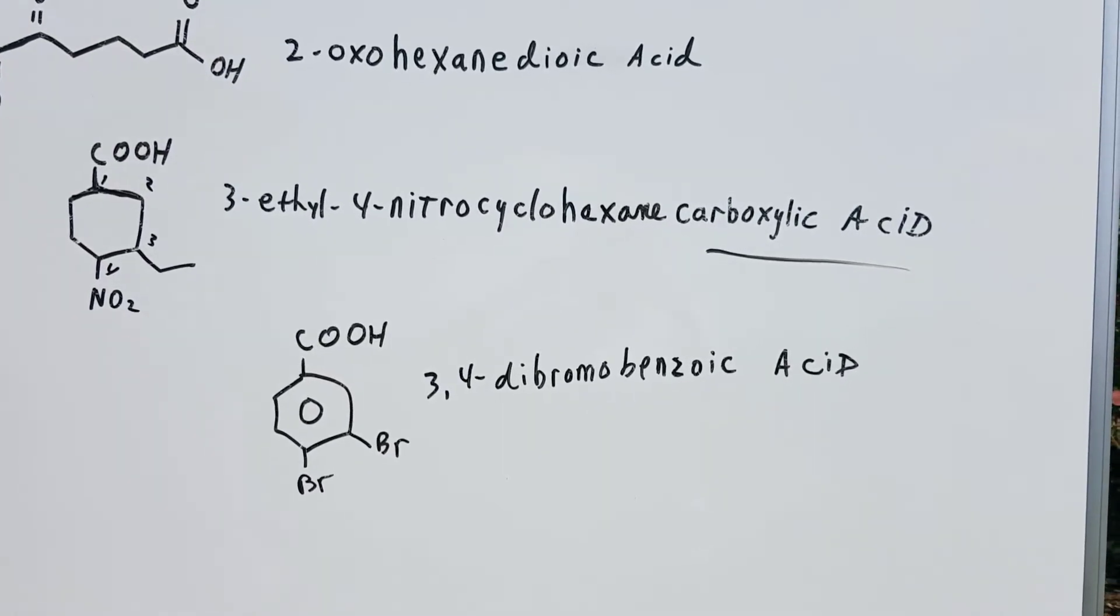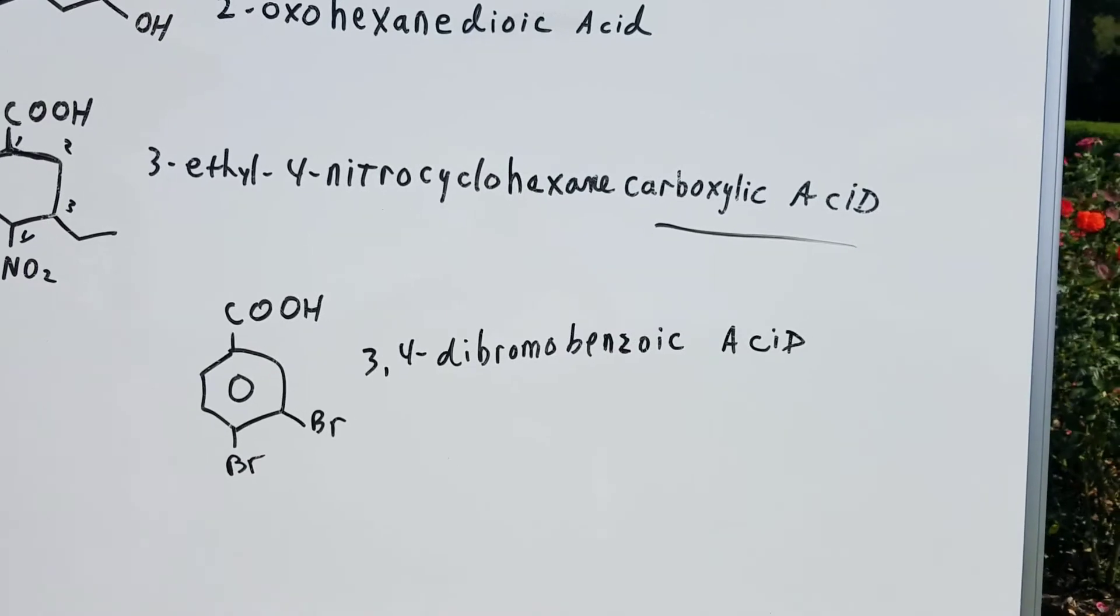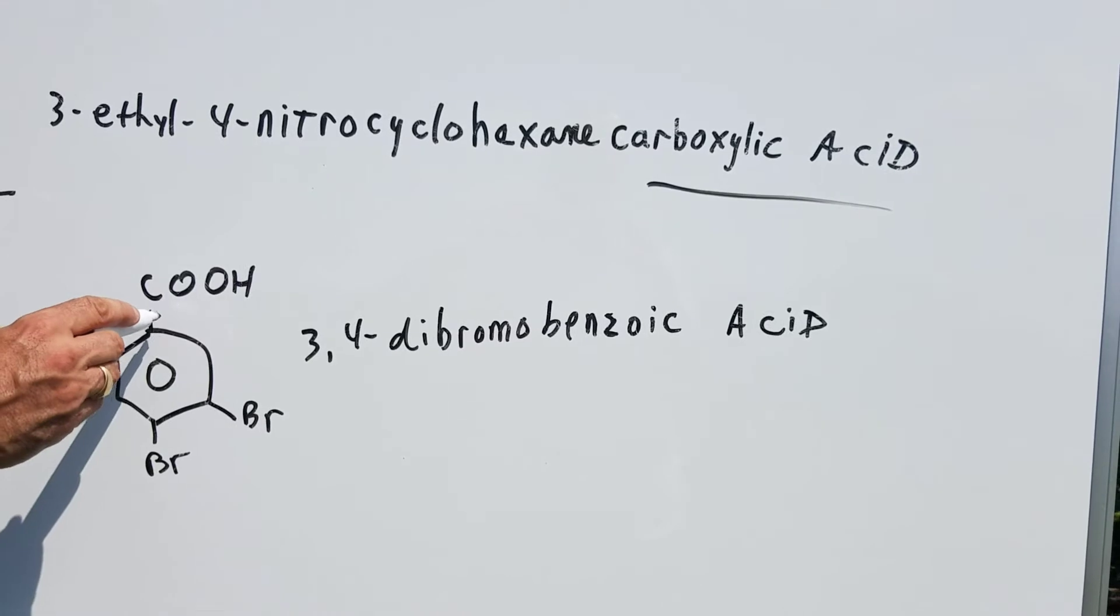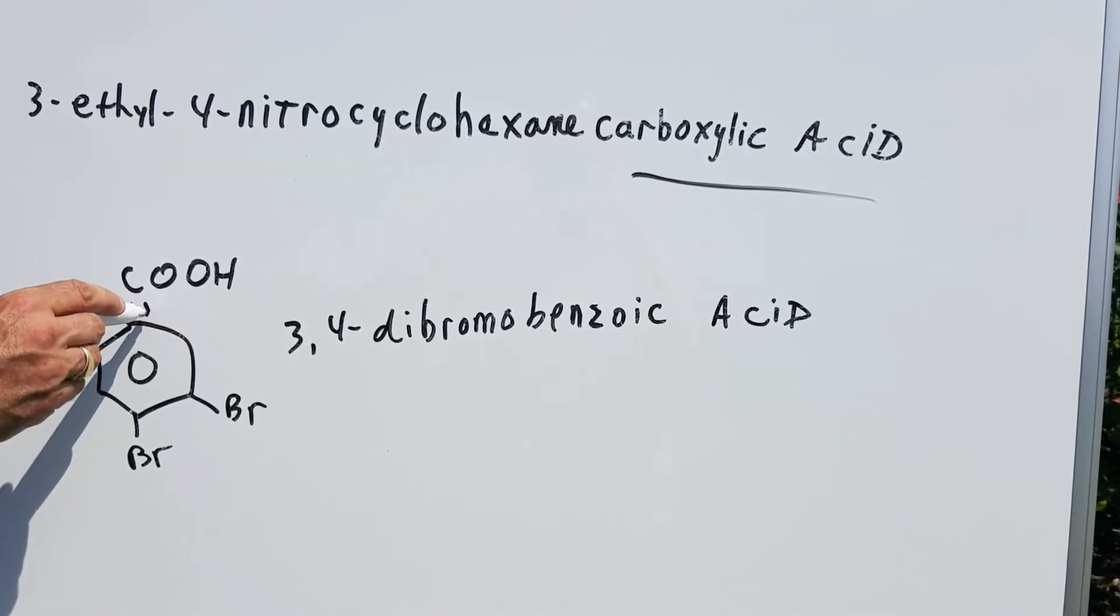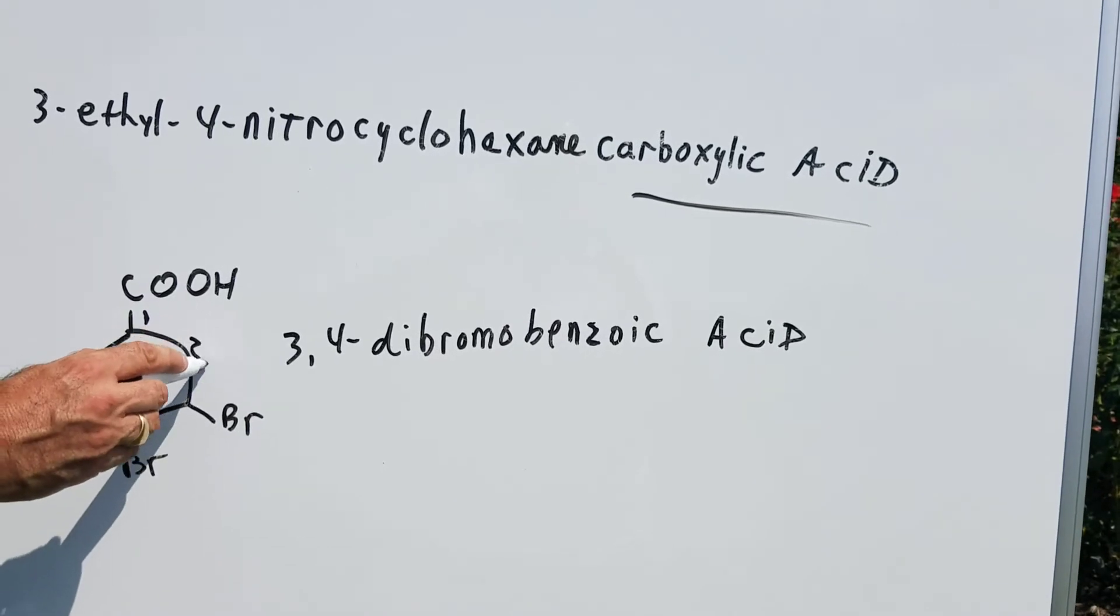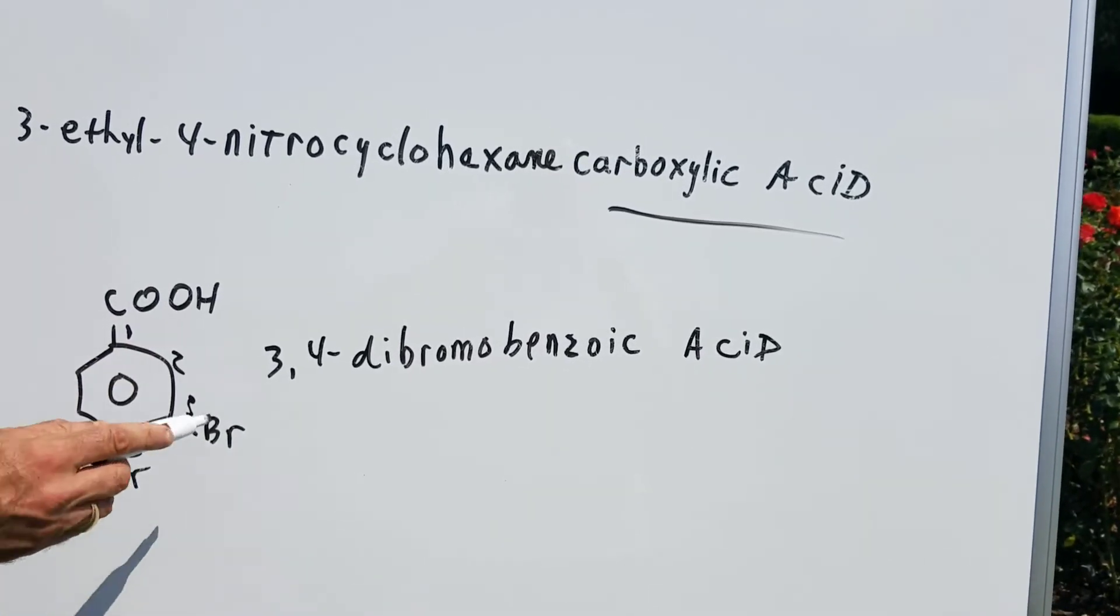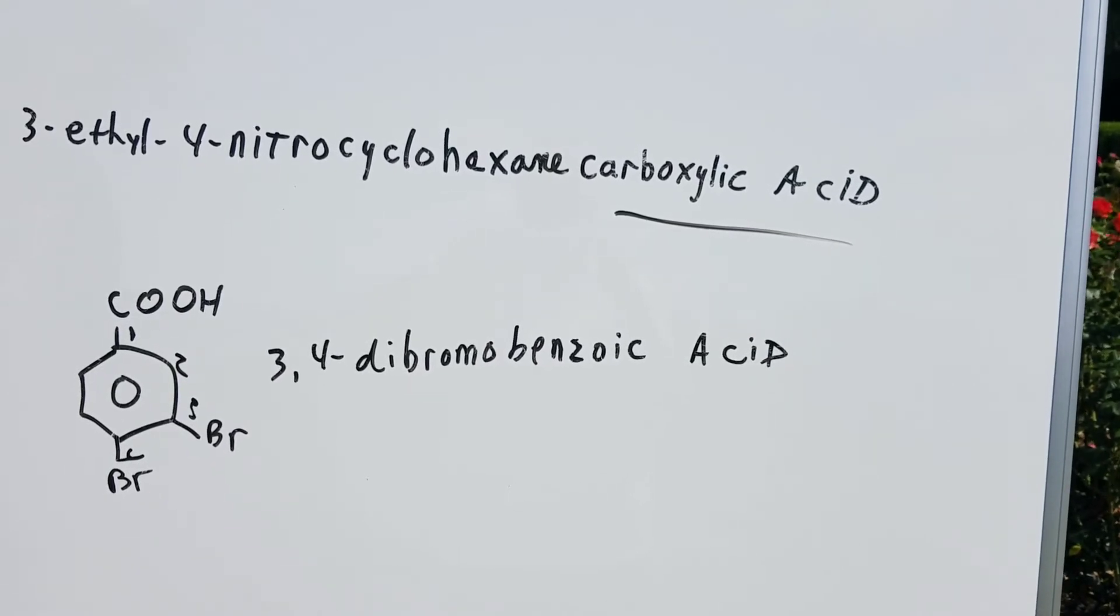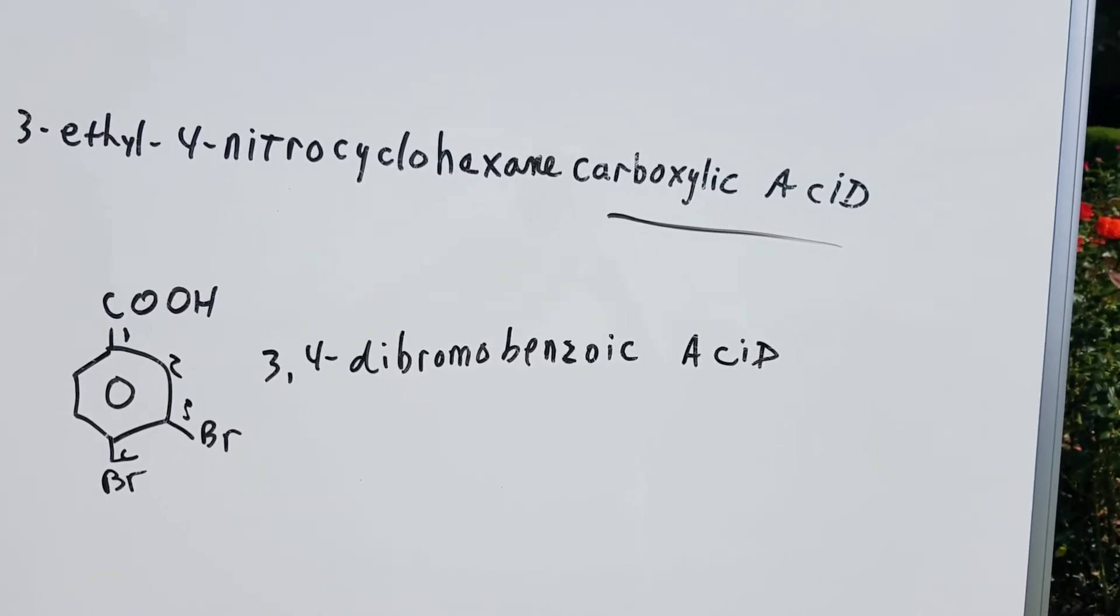And finally, we have a benzoic acid. If these two groups weren't here, it would just be called benzoic acid. The carbon bearing the carboxy group is number one. So this is two. So the bromines are on the three and the four. So we would call this 3,4-dibromo-benzoic acid.